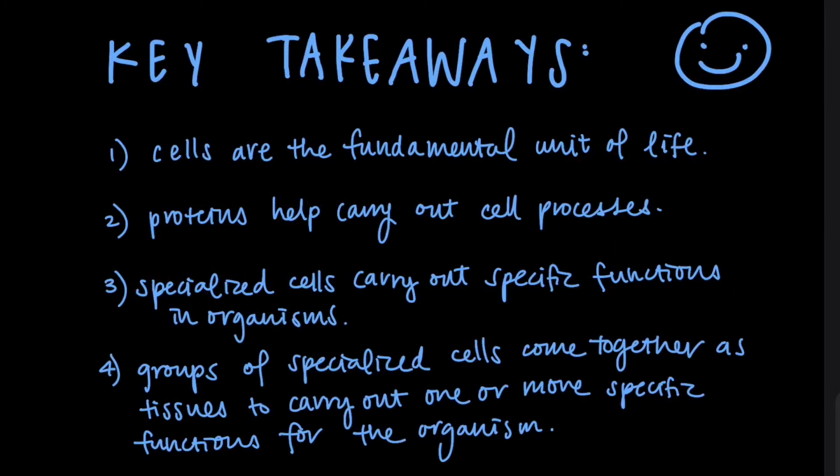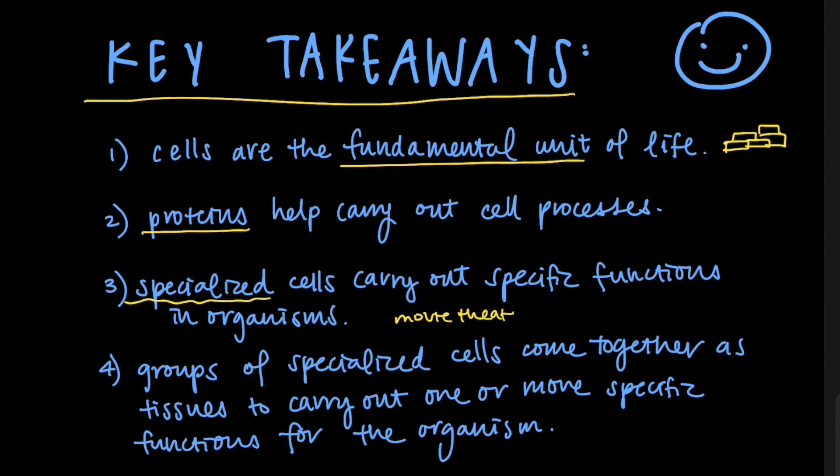So, what are the key takeaways about cell specialization? Number one, cells are the fundamental unit of life. They're the smallest structural and functional unit of an organism. Number two, proteins help carry out cell processes. Number three, specialized cells carry out specific functions in an organism. Think of the movie theater analogy, where each person has its own specific role. And number four, groups of specialized cells come together as tissues to carry out one or more specific functions for the organism.